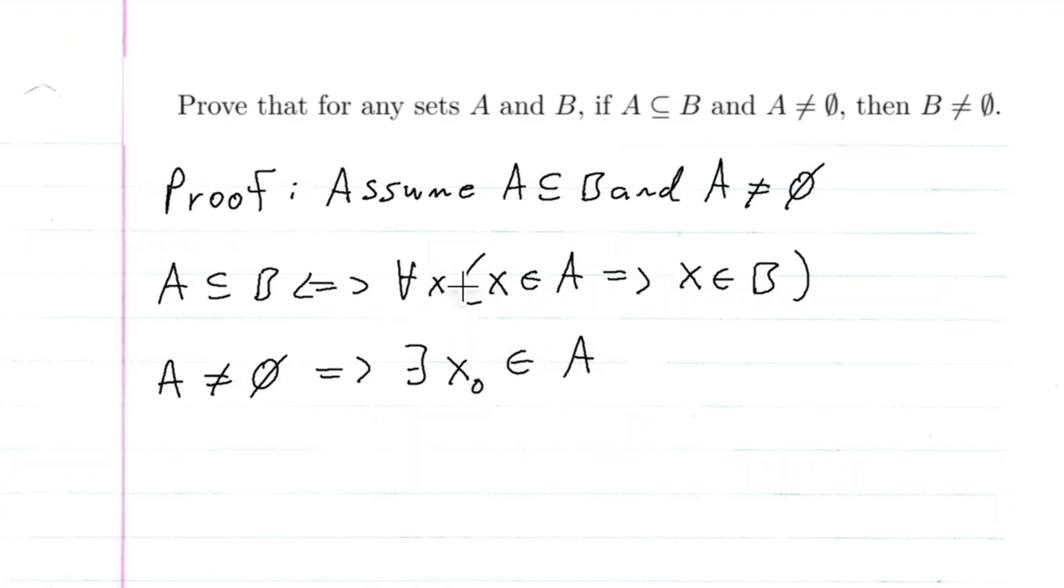And we know that for all X, if X is in A, then X is in B. So if there exists an X in A, then this implies that this X_0 is also in B.